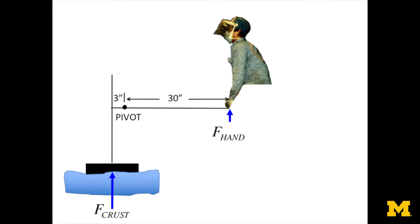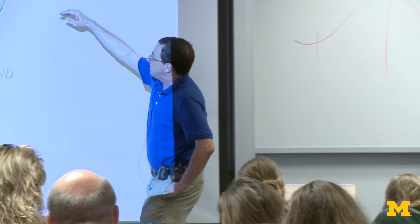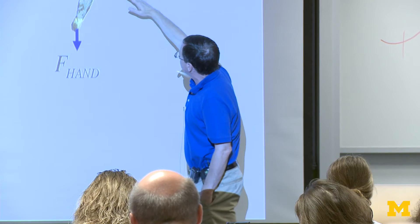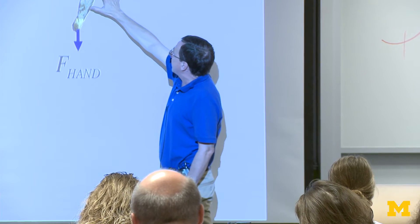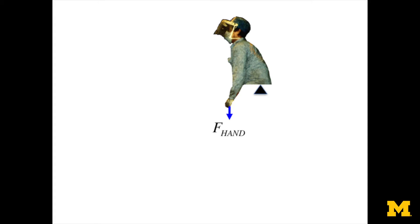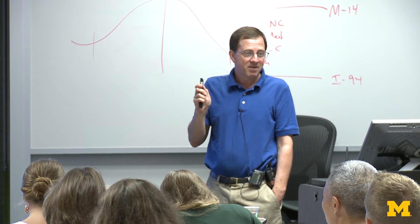Newton said that for every force there's an equal and opposite force. So if he's pulling up with F-sub-hand, the bar is pulling down on him with F-sub-hand at his hands. I've created what engineers call a free body diagram — I've photoshopped out his lower extremity and will analyze the mechanics of his upper body, which is how you do it in engineering. We're going to start with the hand force. There's a pivot point in his lumbar spine. Between the pivot point and the hand force, we'll assume 10 inches from the pivot point to the point of application of that hand force. And the erector spinae muscles — the back muscles — on average are about two inches posterior to the center of rotation.